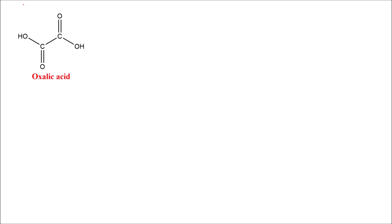What is the meaning of dicarboxylic acid? A dicarboxylic acid is a compound having two carboxylic acid groups — that is, two COOH groups, also written as C double bond O, OH groups. This is called a dicarboxylic acid.